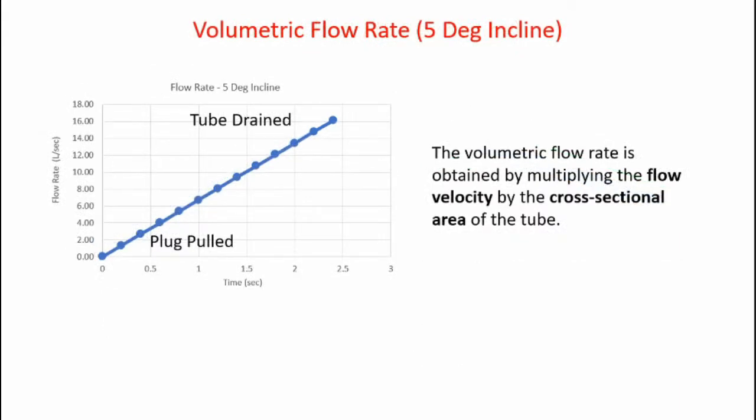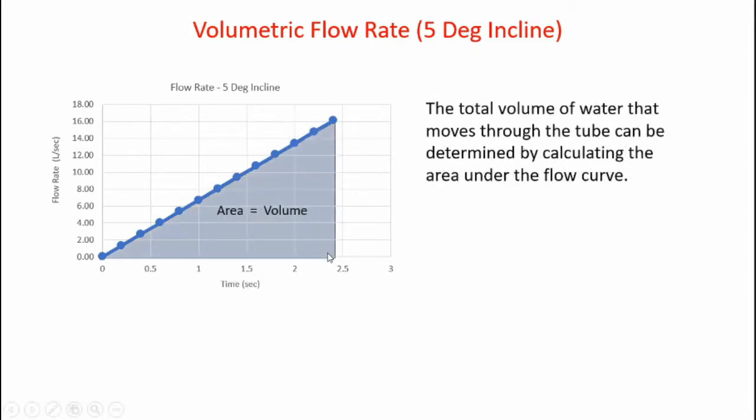I can get the volumetric flow rate by multiplying the flow velocity times the cross-sectional area of the tube. What I get is liters per second. It starts off at zero and then moves up to about 16 liters per second when the tube is finally drained.